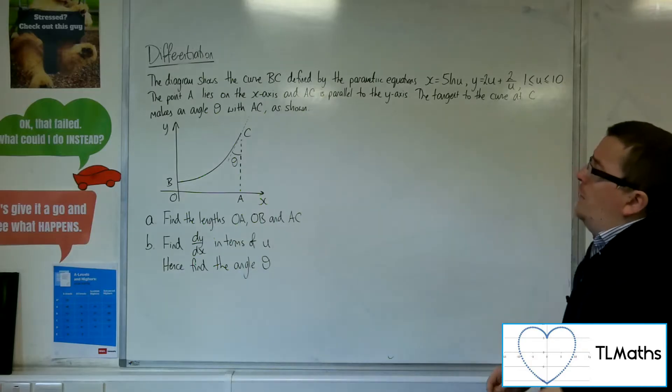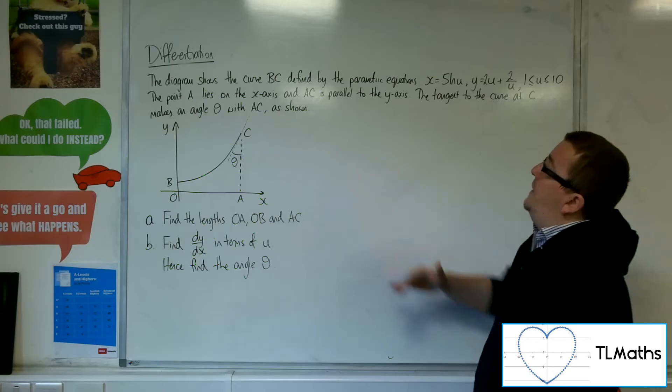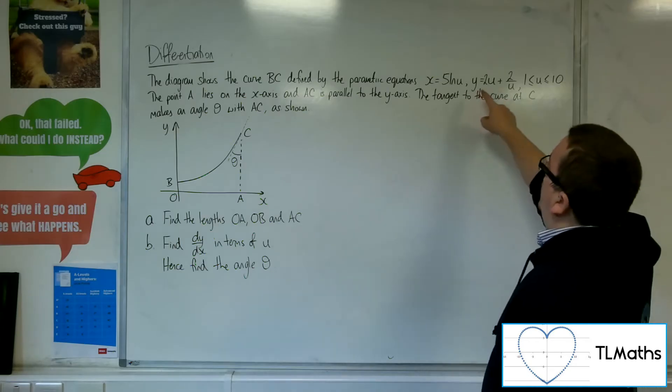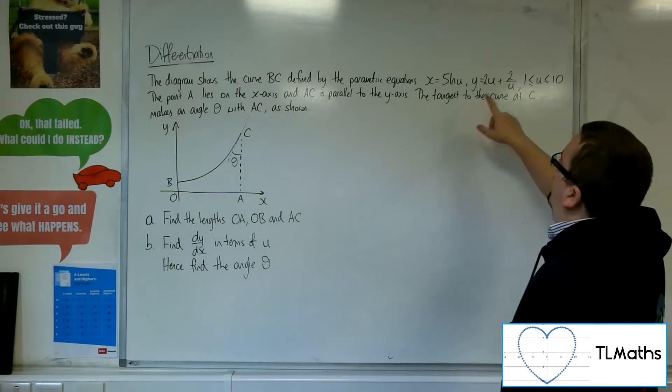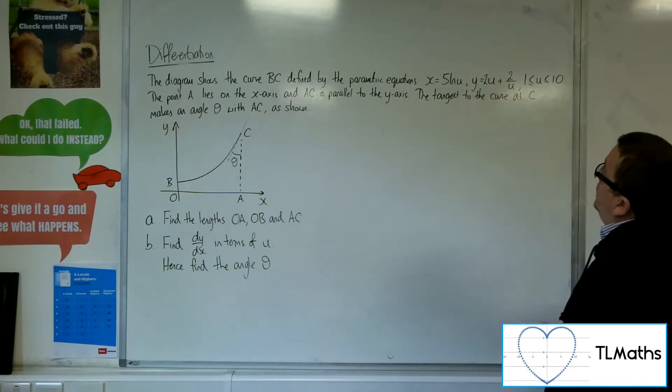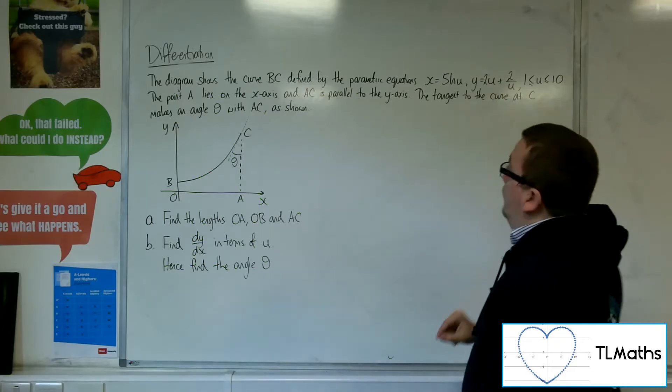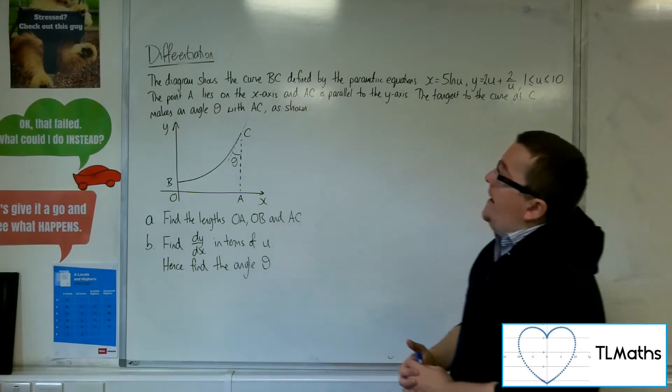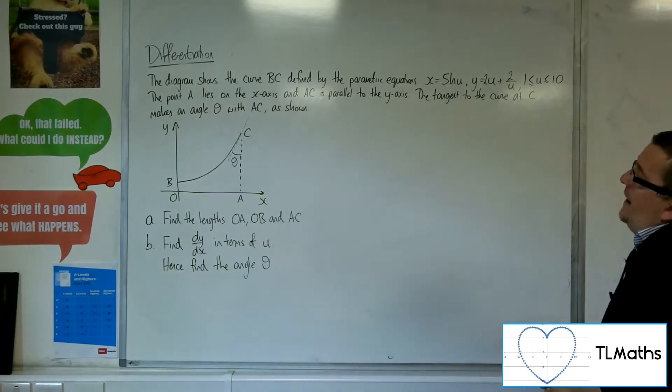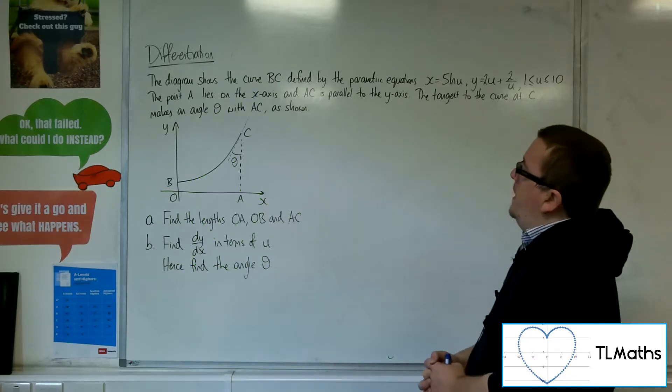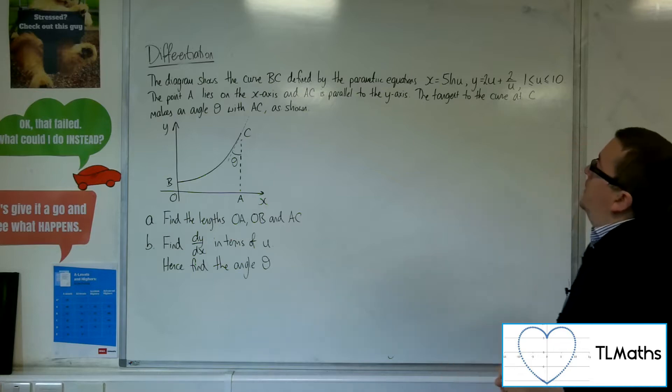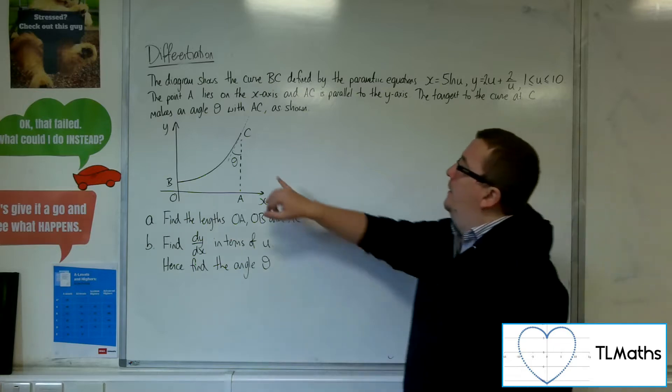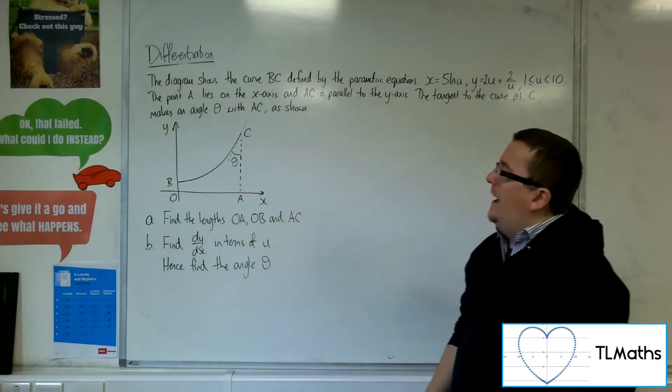The diagram shows the curve BC, defined by the parametric equations x equals 5 log u, and y equals 2u plus 2 over u, where u is going from 1 to 10. The point A lies on the x-axis, and AC is parallel to the y-axis. The tangent to the curve at C makes an angle of theta with AC as shown.